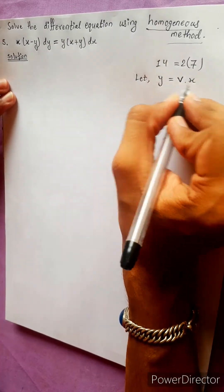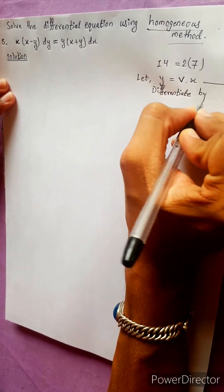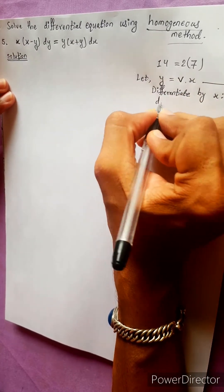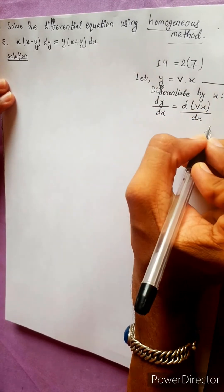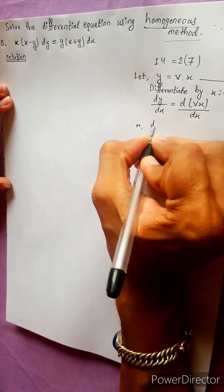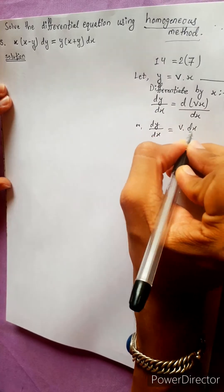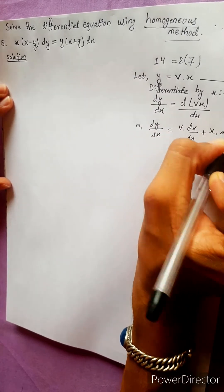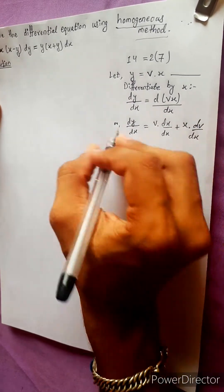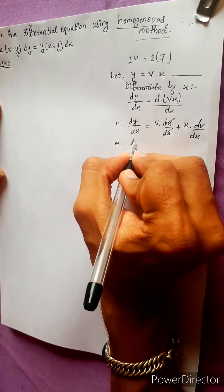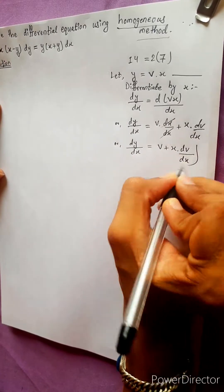Let y equal to vx. Let us differentiate with respect to x. Differentiate dy/dx. It is equal to d(vx)/dx. By the product rule, dy/dx equals v plus x dv/dx.